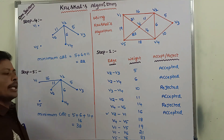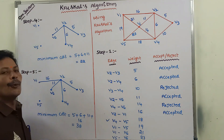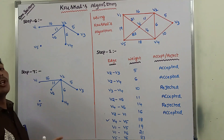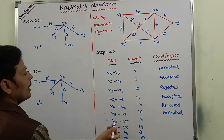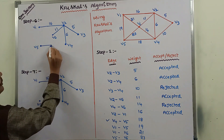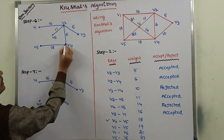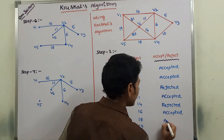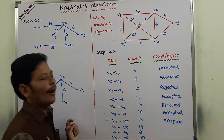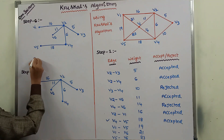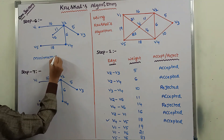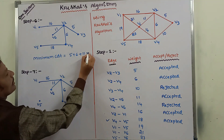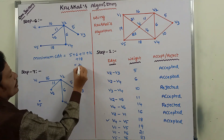Next, we go for the next minimum weighted edge: V4 to V5, weight 18. That can be added to the spanning tree without forming a cycle. After adding this edge, there is no cycle formed. So this edge is accepted. The minimum cost of the spanning tree is now 5 plus 6 plus 11 plus 16 plus 18, which equals 56.